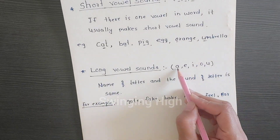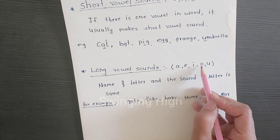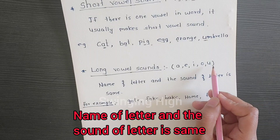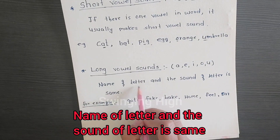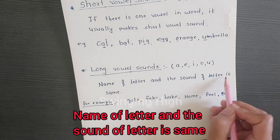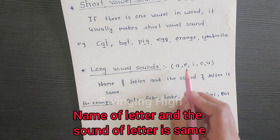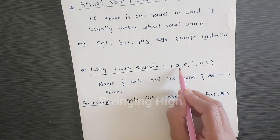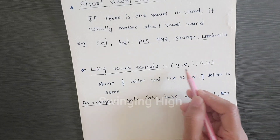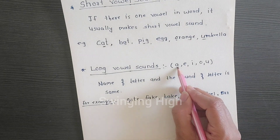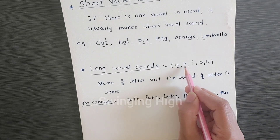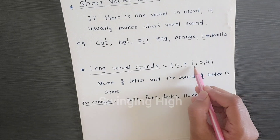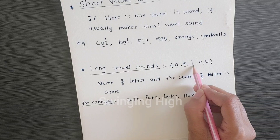The vowels are the same for long vowel sounds: A, E, I, O, U. The only difference is that the name of the letter and the sound of the letter are the same. For example, A says its name 'ay', E says its name 'ee'.